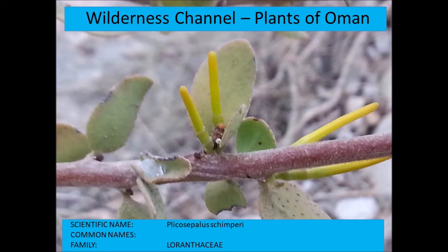In the Loranthaceae you have hemiparasitic plants such as Plicosepalus chimperi, which has yellow flowers, and another called Plicosepalus acaciae — shown later. They grow as hemiparasites, using haustoria to get nutrients from the plants they grow on.